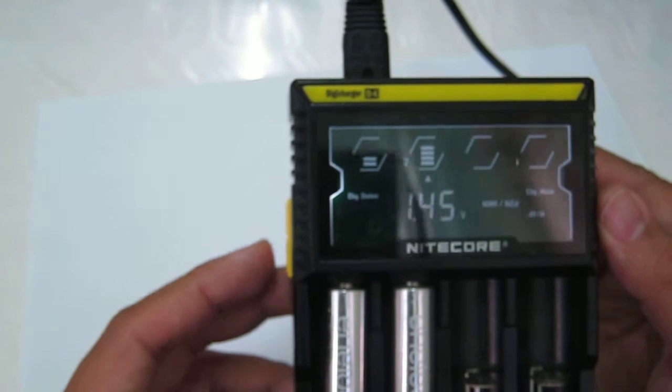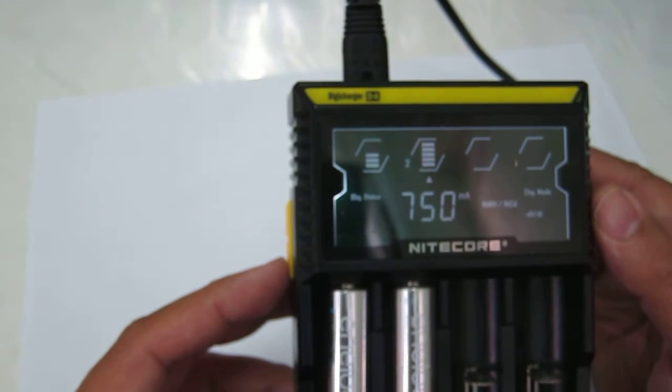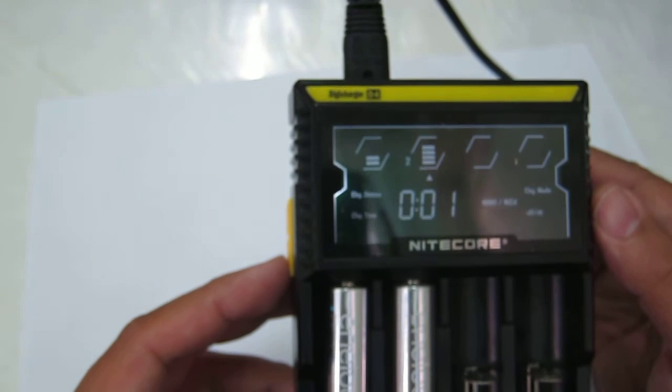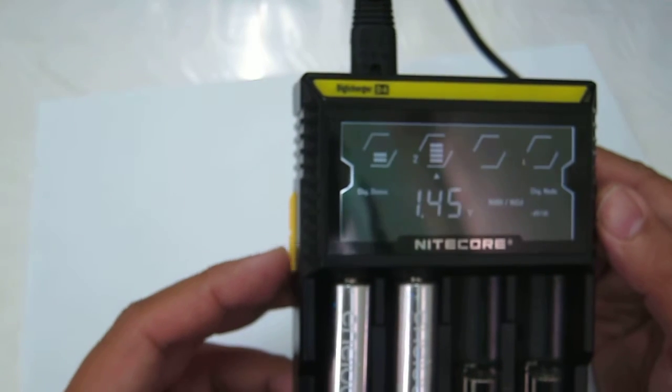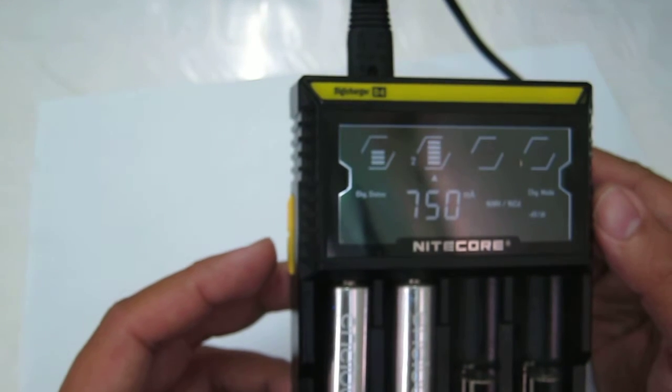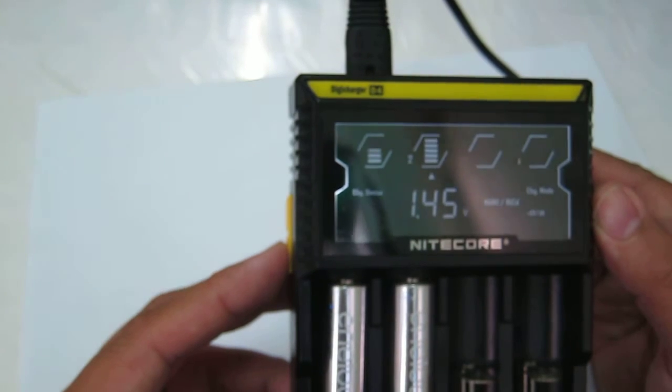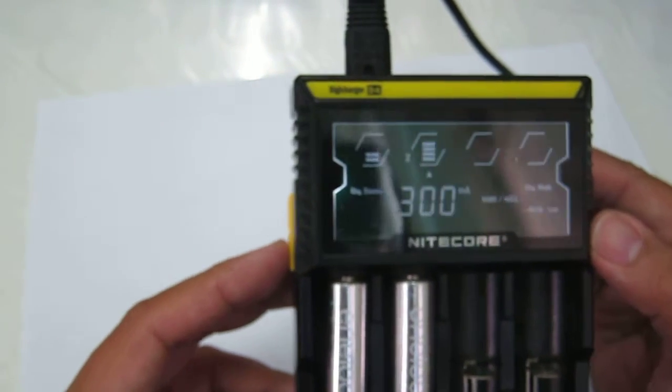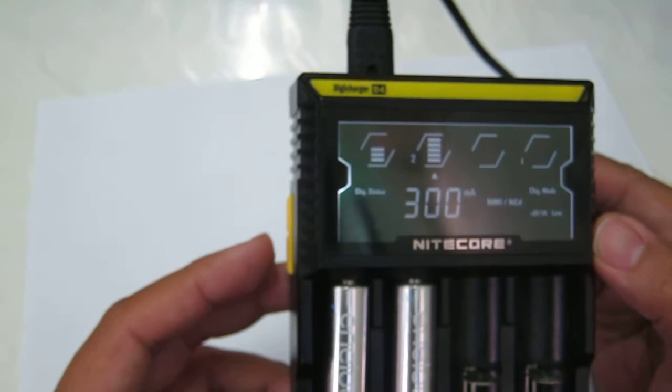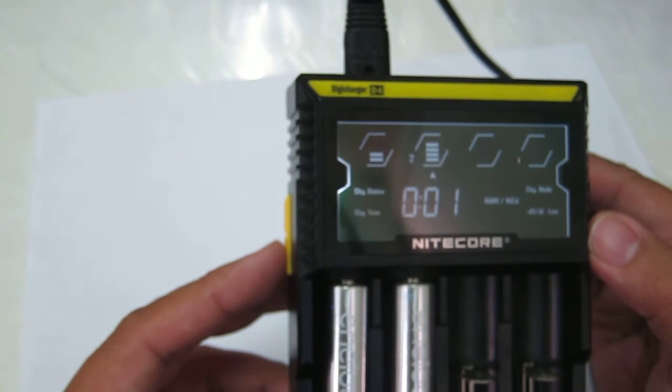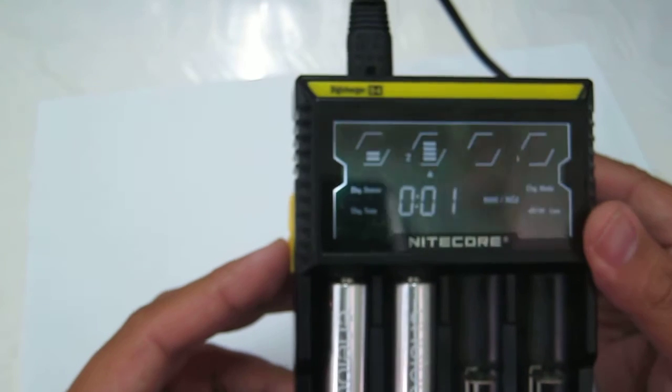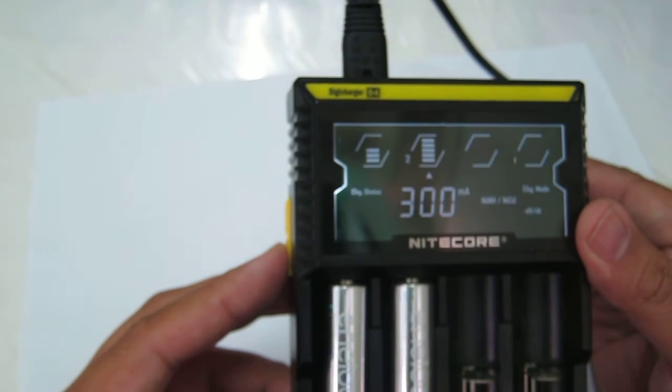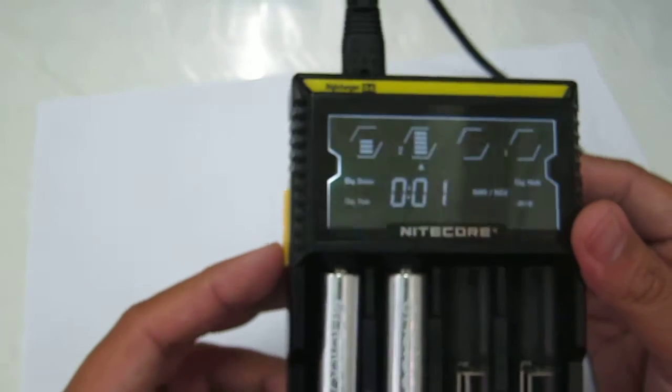If you want to charge at a lower rate, maybe for conditioning a battery or if you have more time, the current charge rate is 750 milliamps. Press and hold - the low indicator appears and you are now charging at 300 milliamps. Then you turn it off by pressing and holding again.